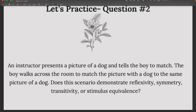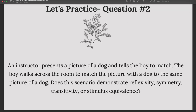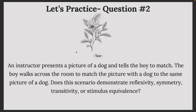Question two: An instructor presents a picture of a dog and tells the boy to match. The boy walks across the room to match the picture of a dog to the same picture of a dog. This is identical matching — we're matching the picture to the same picture. When we see scenarios that involve identical matching, we should recognize this as reflexivity, a very clear case of A equals A.